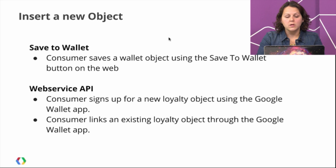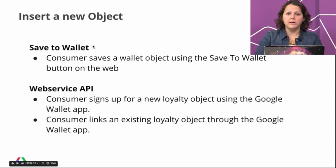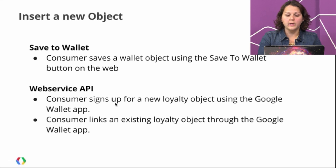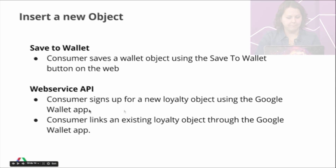What happens when we want to insert a new object? Objects can't be inserted using the RESTful API, so you have two options. The first is using the Save to Wallet button, where the consumer clicks the button on the web and that inserts the object into their Google Wallet app. The second is using the Web Service API, which currently only works for loyalty. The reason we don't offer saving objects through the REST API is that objects need to be associated with a Google user account, and there's no way to do that association via REST with OAuth.